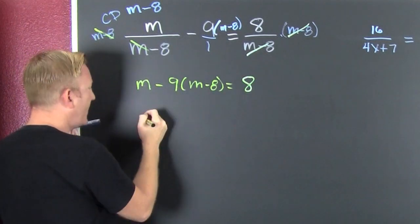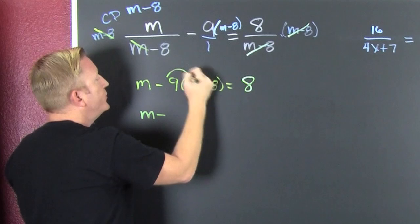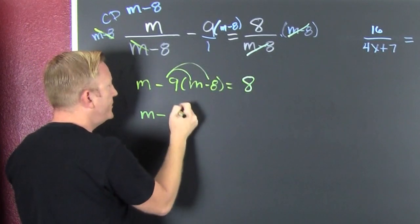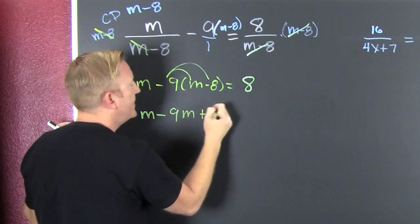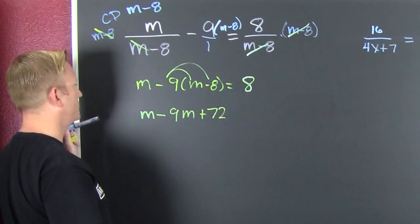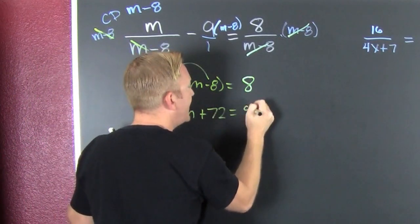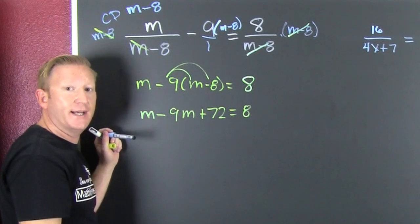Finish him. So then that's m minus 9m minus. Minus and minus make plus. 72. On a good day. And then that's 8. And then I'm going to gather, collect, and combine.